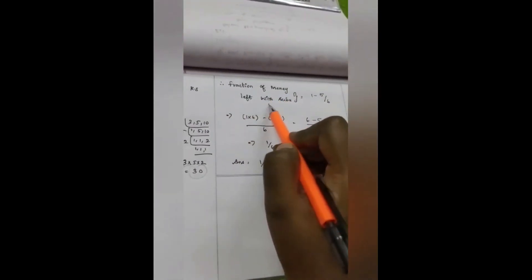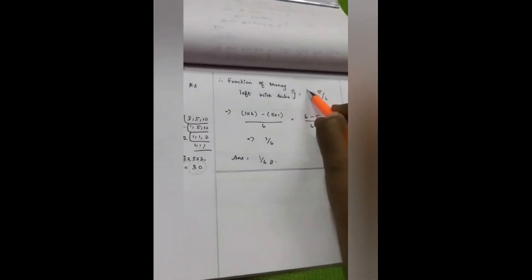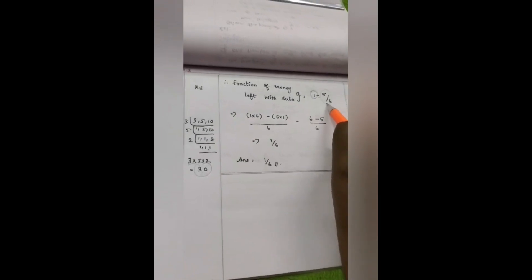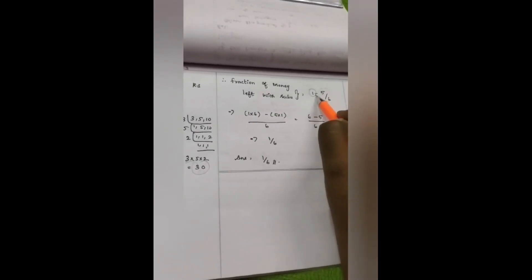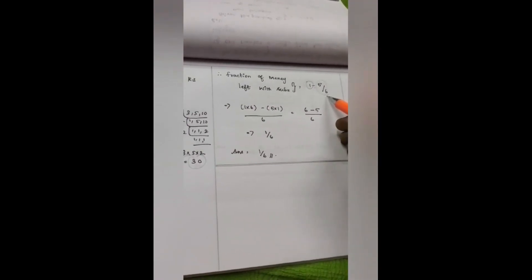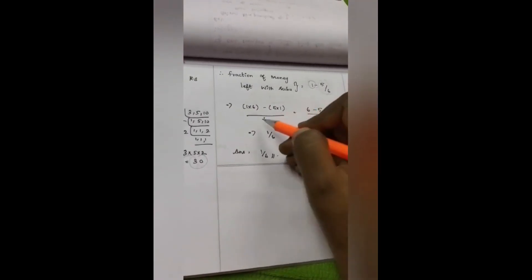Therefore, fraction of money left with Subbu: whole part minus the amount he has spent for rent, food and other usuals. That is why 1 minus 5 by 6. See here, we have denominator 6.